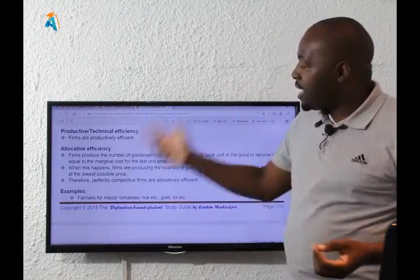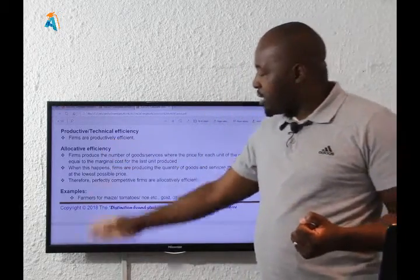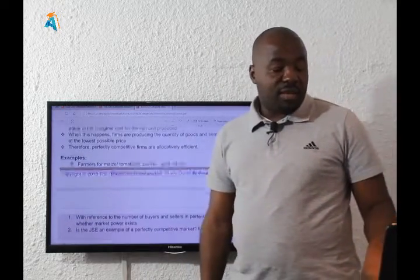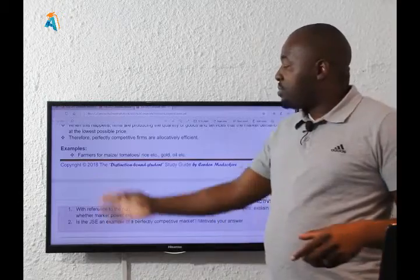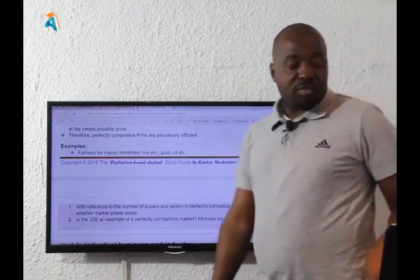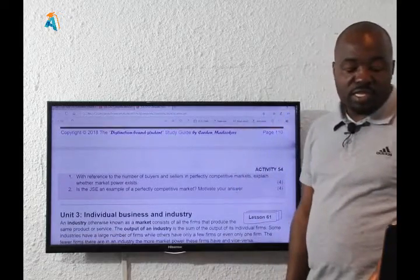Then a firm in a perfect market can achieve productive efficiency and a firm can also achieve allocative efficiency. And here we have examples, I've been mentioning farmers for maize, tomatoes, all that stuff. Okay so this brings us to the end of this lesson number 60.